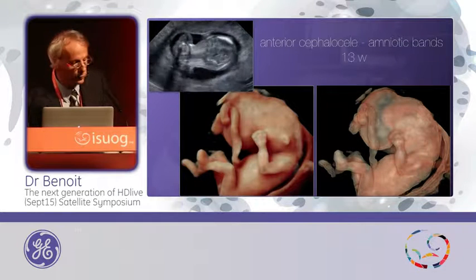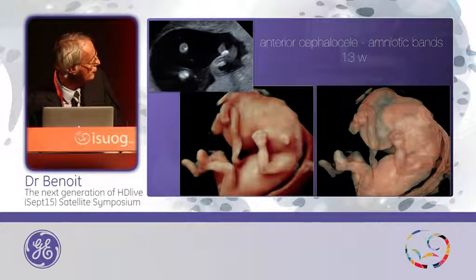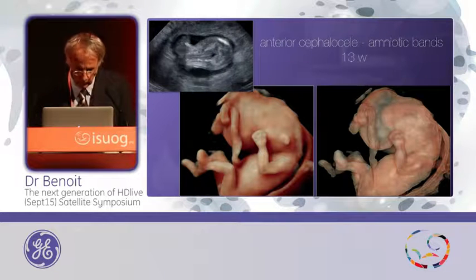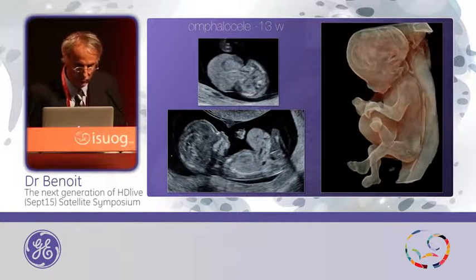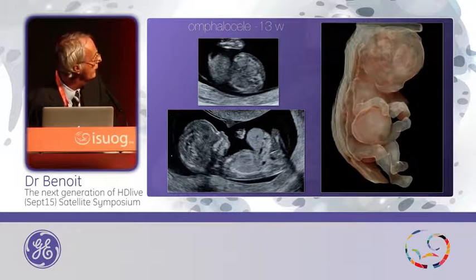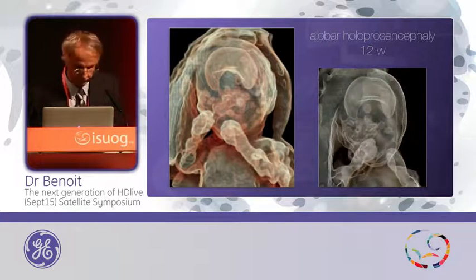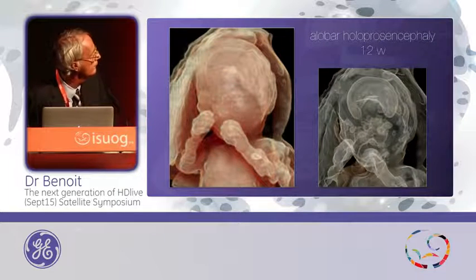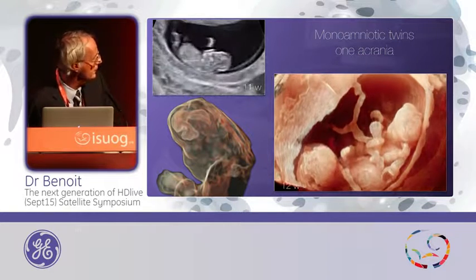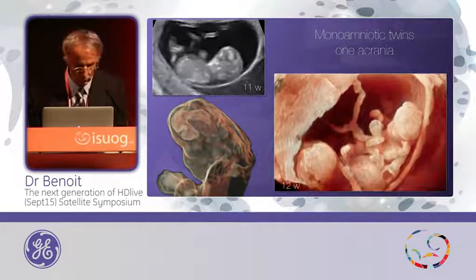Malformation: this was an anterior cephalocele caused by amniotic band — the cord was stuck on the head to the cephalocele, and with transparency you can see the liquid part and a part of the choroid plexus was outside. Omphalocele at 13 weeks of pregnancy with club hand. Holoprosencephaly at 12 weeks — you can demonstrate this single frontal ventricle without cutting with a magic cut. This was monoamniotic twins where one had acrania — the 2D picture was at 11 weeks and the 3D picture at 12 weeks with a tangled umbilical cord, and with silhouette you can see the abnormal shape of the ventricle inside the brain.